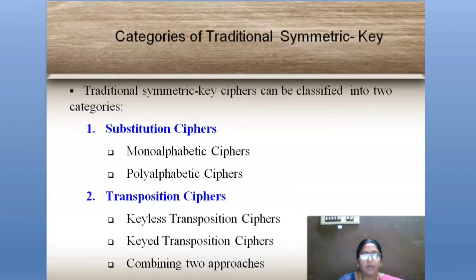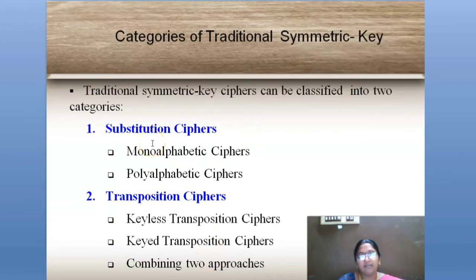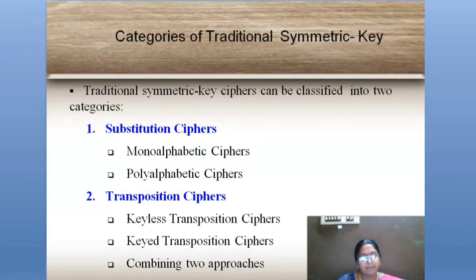Next, we are going to learn about the categories of traditional symmetric key ciphers. It can be broadly categorized into two types: one is substitution cipher and another one is transposition cipher. In substitution cipher, we have mono-alphabetic and poly-alphabetic subtypes, and transposition cipher also has a few types.